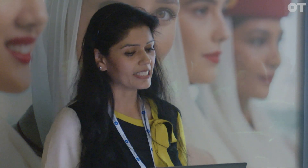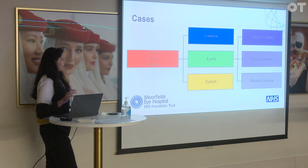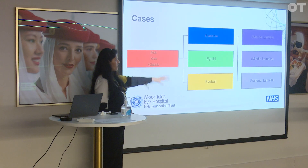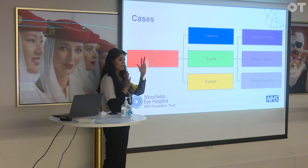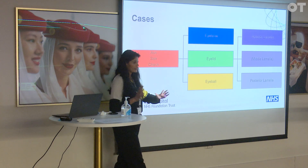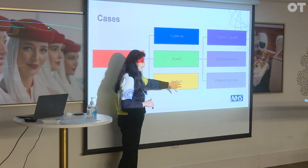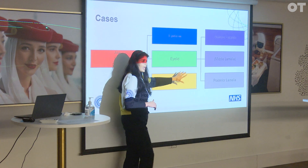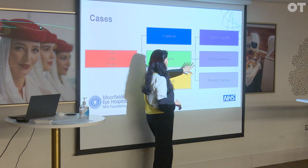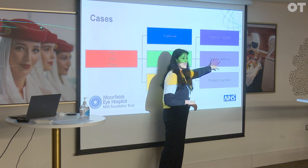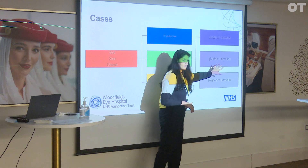We're going to start by reviewing the upper lid anatomy, function, and assessment. I want us to consider what we see, what we can check, what we can ask — in a really systematic way when we look at these cases. We go from the eyebrow to the eyelid to the eyeball, and when we look at the eyelid we're going to look at the anterior lamellar, posterior lamellar, and maybe the middle lamellar.